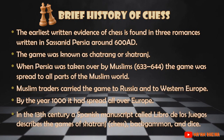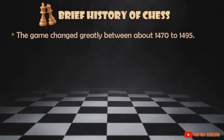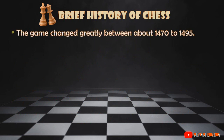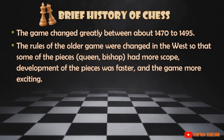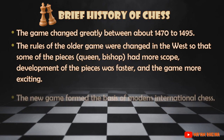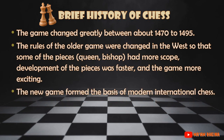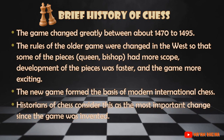In the 13th century, a Spanish manuscript called Libro de los Juegos describes the games of chess, backgammon, and dice. The game changed greatly between about 1470 to 1495. The rules of the older game were changed in the West so that some of the pieces had more scope, development of the pieces was faster, and the game more exciting. The new game formed the basis of modern international chess, and historians consider this the most important change since the game was invented.